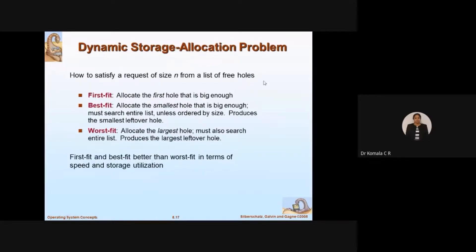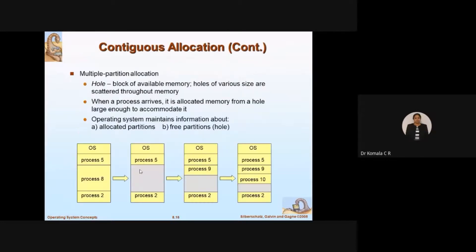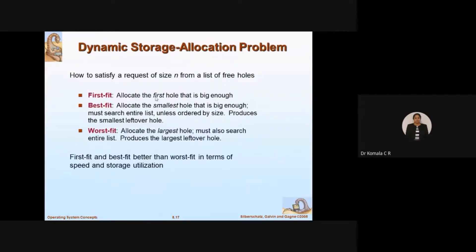Based on the requirement, we use techniques called first fit, best fit, or worst fit. First fit means the OS allocates the very first hole that is big enough. Whichever hole is big enough and is found first, that is the one allocated — that is called first fit.